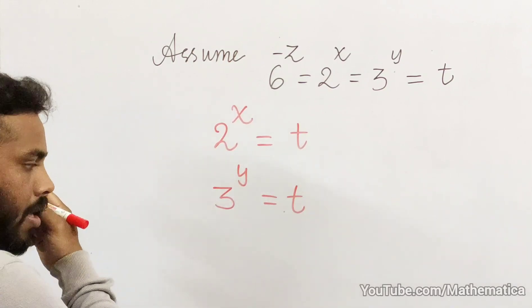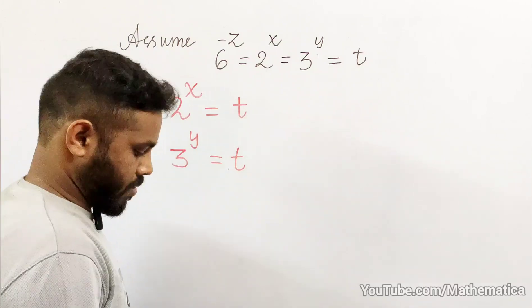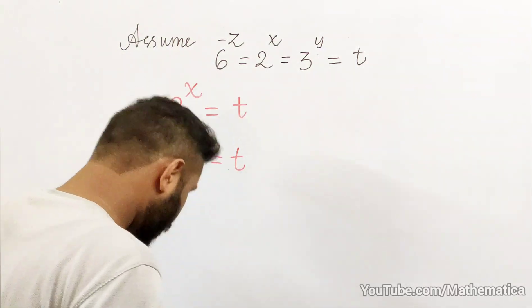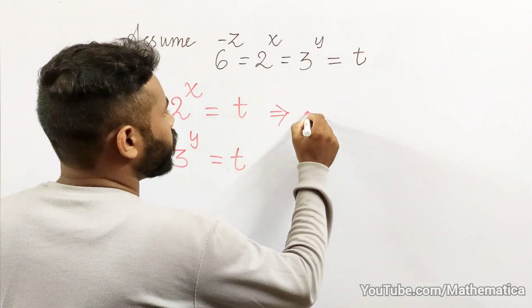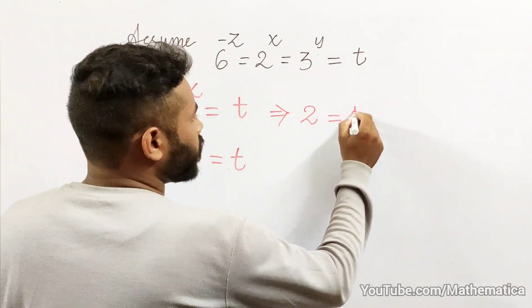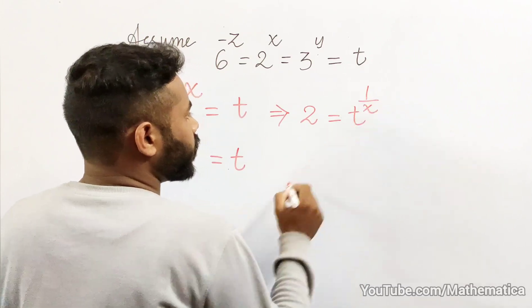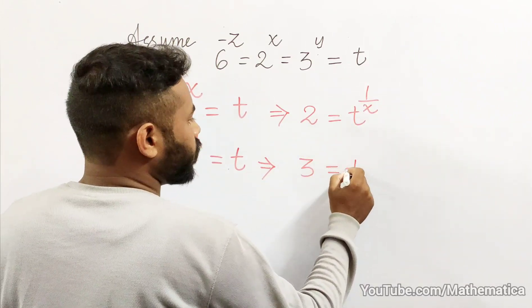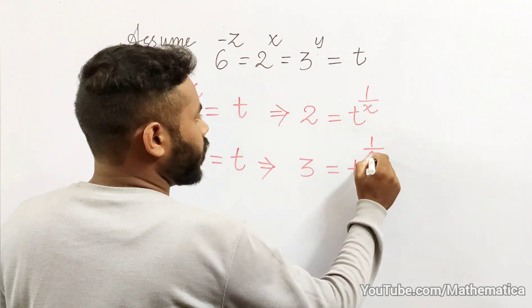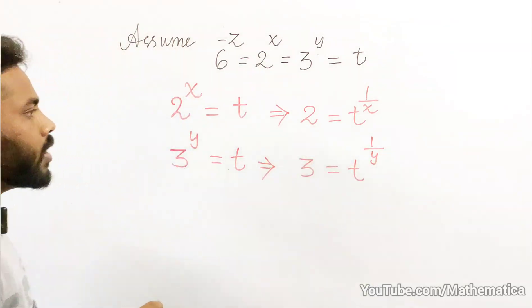All right, so from here I can write that 2 is equals to t to the power 1/x. Right, similarly here also I can write that 3 is equals to t to the power 1/y. Remember that this is a very crucial point here.